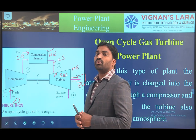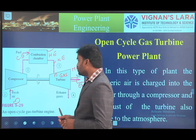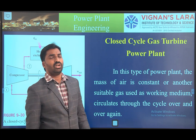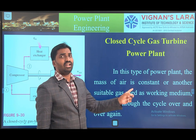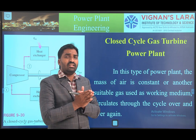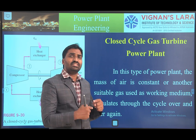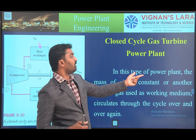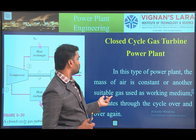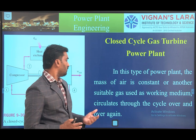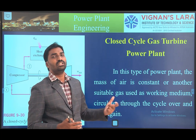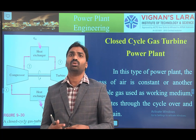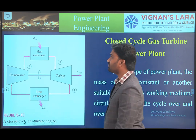The second type is the closed cycle gas turbine power plant. In a closed cycle, the gas is regenerated or recycled after the exhaust process. A fixed mass of air is continuously circulated through the cycle. The mass of air is constant — a suitable gas used as the working medium circulates through the cycle over and over again without replacement by fresh air.